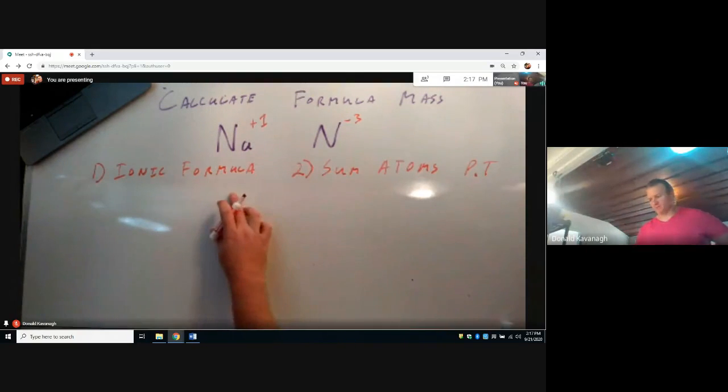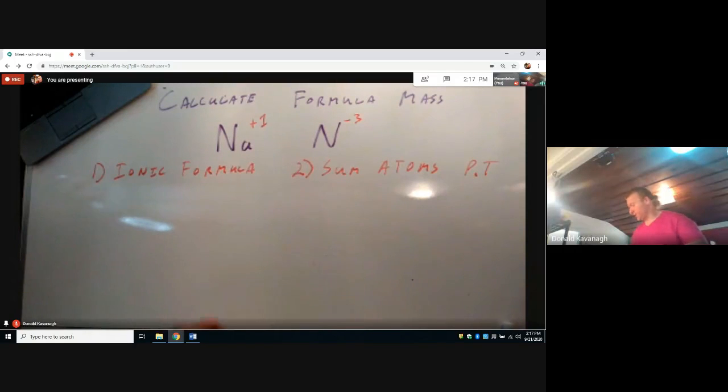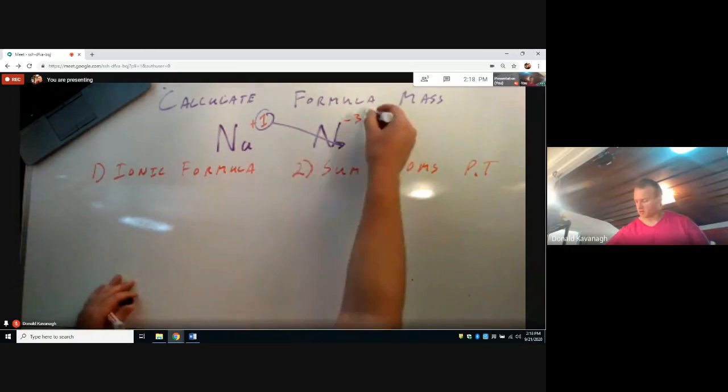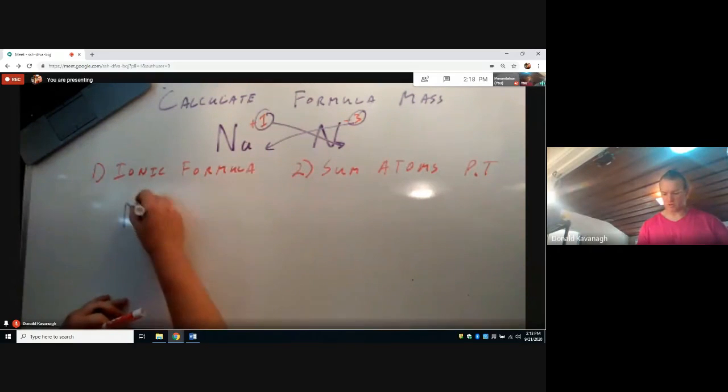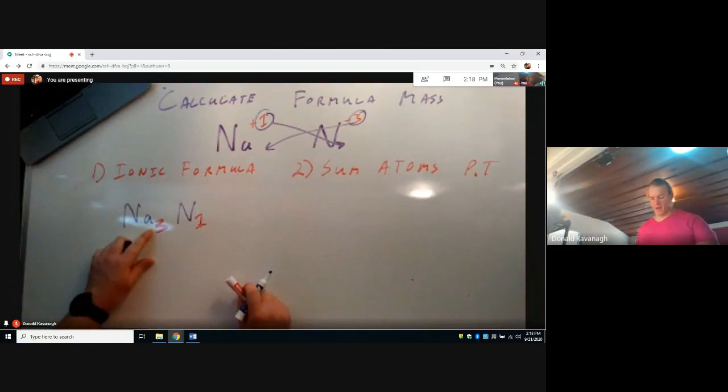To get the ionic formula, we need to get the ratio that these two atoms will combine so that they neutralize each other's charge and are in the lowest common ratio. A little trick, and it's really a math trick, is crossing these charges down here will give us the ratios necessary. So this three and the nitrogen, this one comes down here. Now we are saying that three sodium atoms and one nitrogen atom is that ratio.